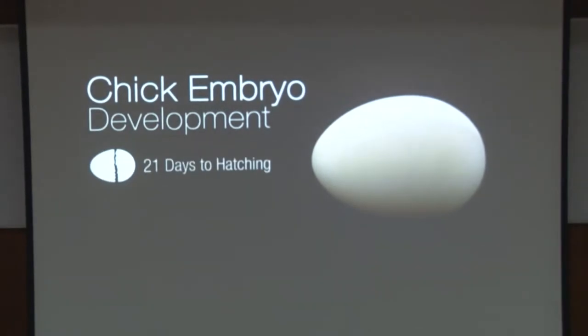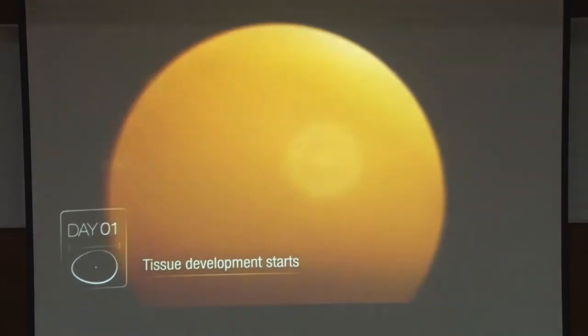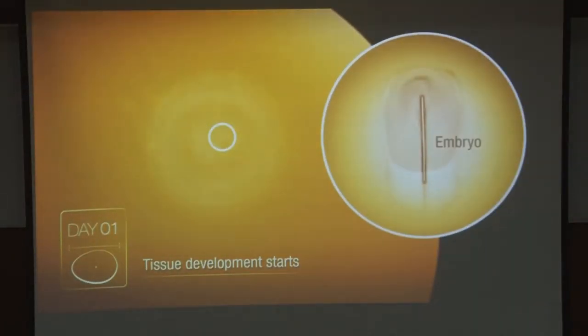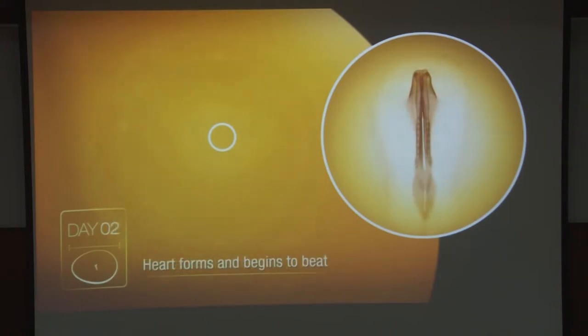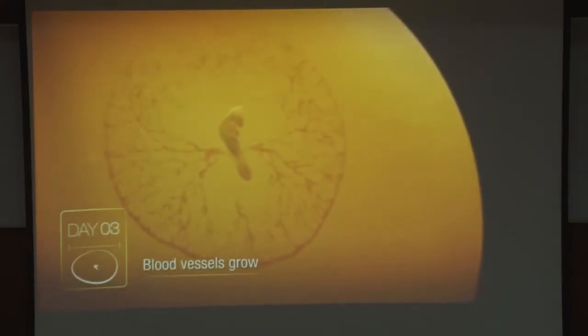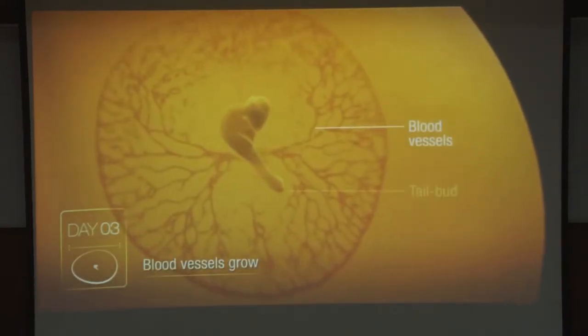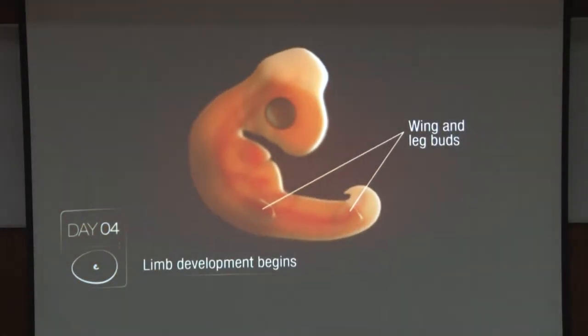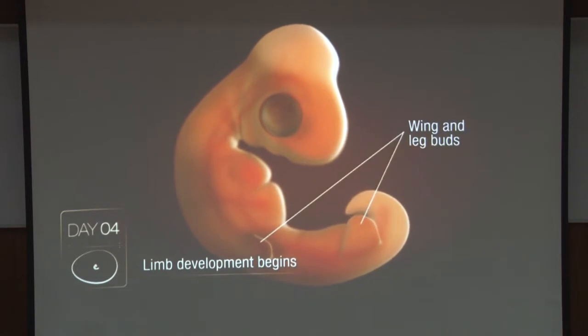You start with an egg and it takes about 21 days to hatch. In the very beginning it just looks like a dot, then there is a disc. In the disc there is a line called the primitive streak. It starts to develop into what looks like an embryo, and then a heart starts beating and develops a network of blood vessels. It is a self-contained system — the entire development happens in the egg.